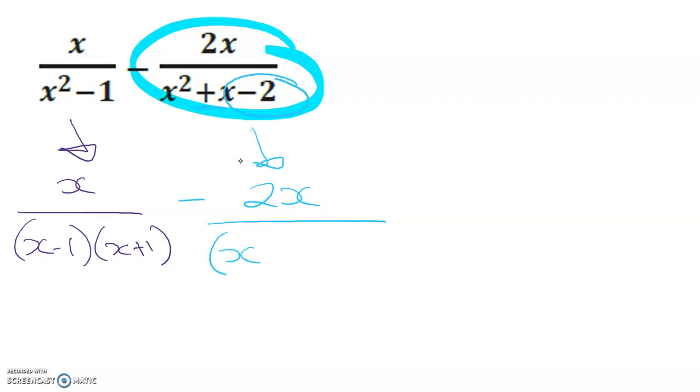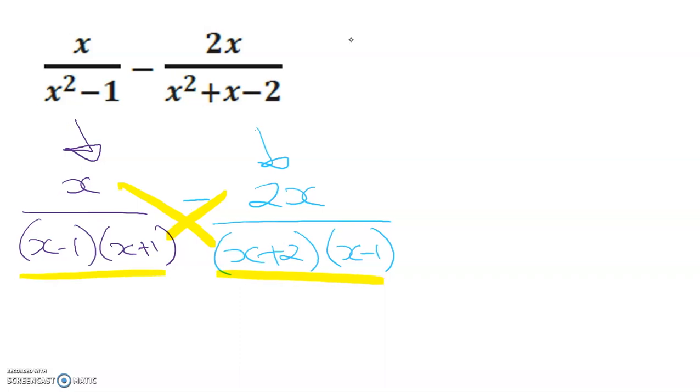That's going to be (x+2) and (x-1). Now you could use the cross multiplication method here and simply multiply the opposite numerator by both denominators in each case.